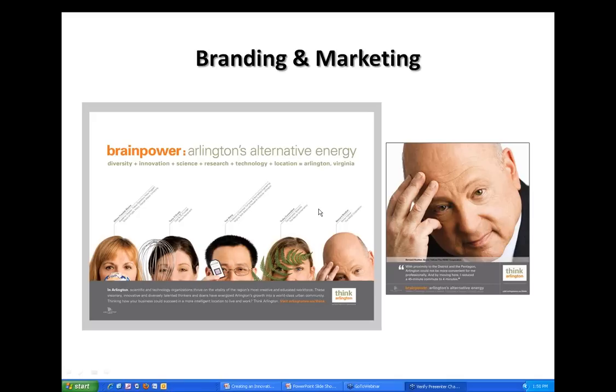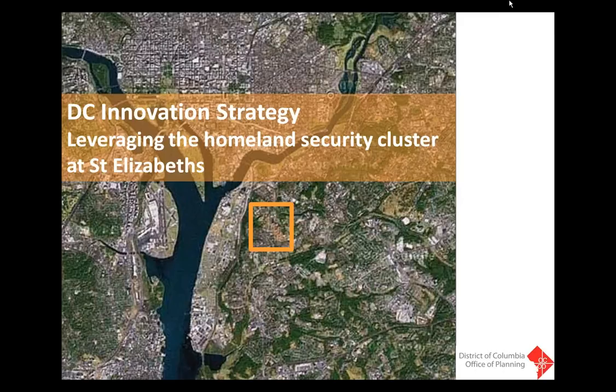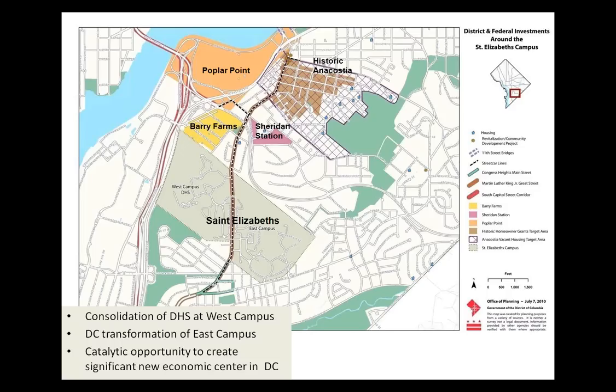I'm going to hand it over to Sakina now. Hi, everyone. My name is Sakina Khan, and I'm the Senior Economic Planner with the DC Office of Planning. As Terry said, there is an effort underway within the district as well as the region to really focus on how best to leverage the Homeland Security cluster within this region. I'm going to be talking about the planning and analysis currently underway in the district, and also touching on the community and place-based implications of an innovation strategy.